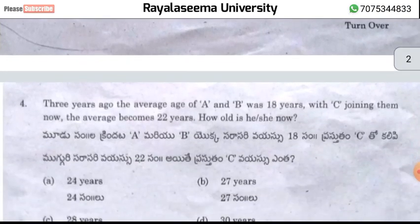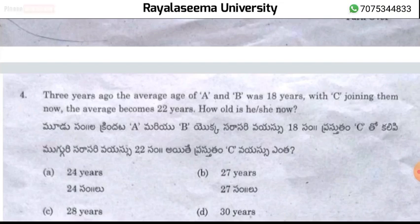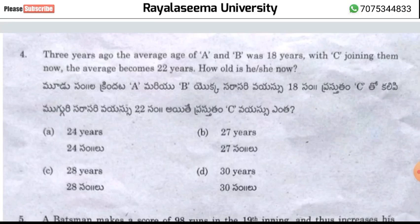Question number 4: Three years ago the average age of A and B was 18 years. With C joining them now, the average becomes 22 years. The answer is 24 years for C's present age — this is an easy average-based question.